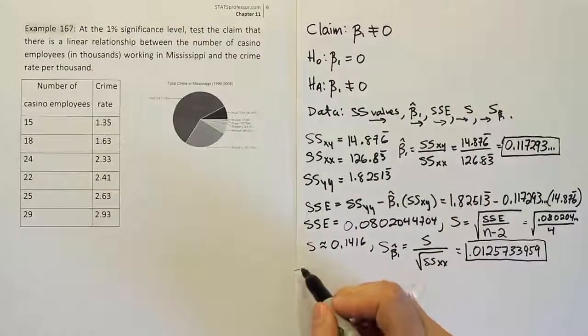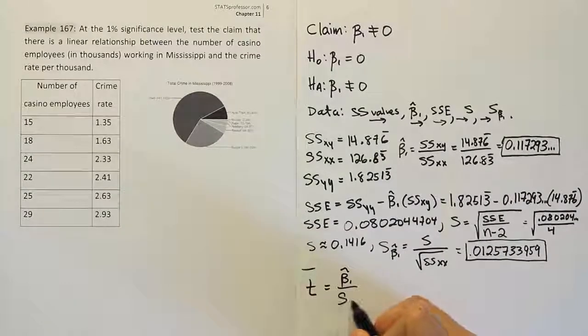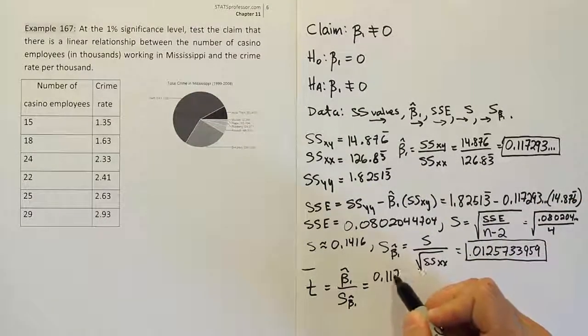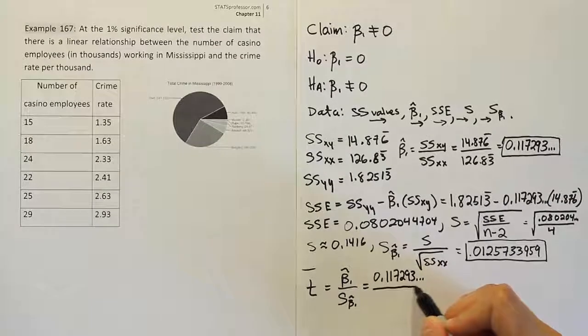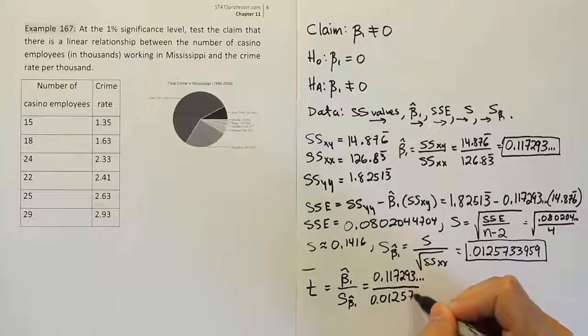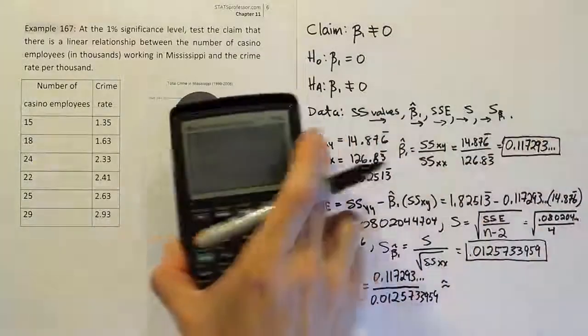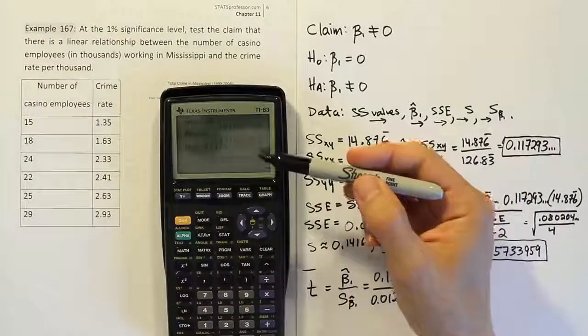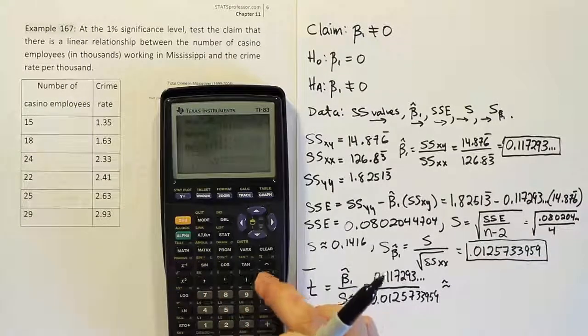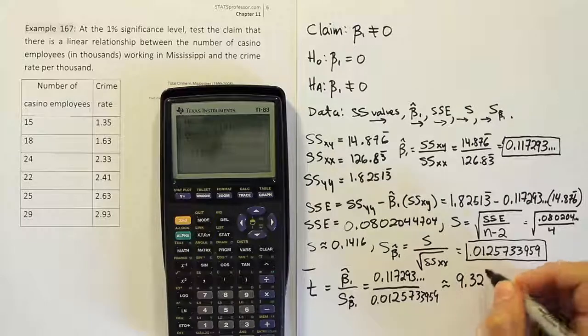There's two things we wanted to get, the β₁ hat and the S for β₁ hat. Those two things collectively give us our test stat. So let's take those numbers and now apply them into our next step of the problem. The next step of the problem is to do the test statistic. It's going to be a t test statistic. It has a simple formula. It's β₁ hat divided by its standard error. And as we enter that in, we're just going to put the numbers that we already calculated, 0.117293 dot dot dot, divided by the number we have down here, which is 0.0125733959. So I'm just going to take the 0.117293 and divide it by that value. And when I finish, I get a test stat of 9.329.